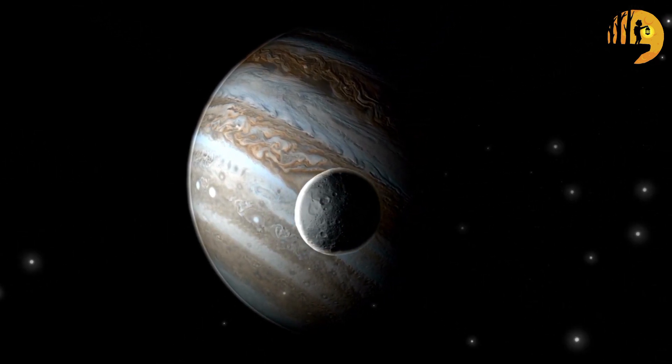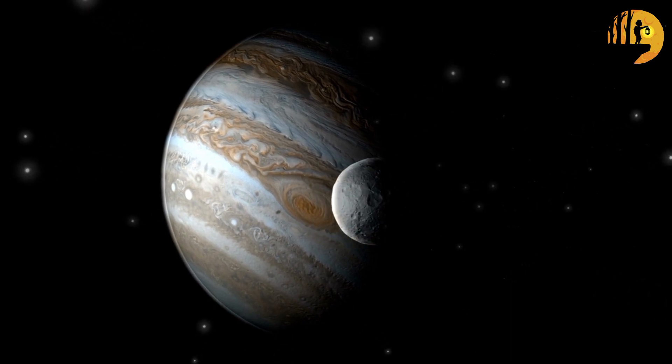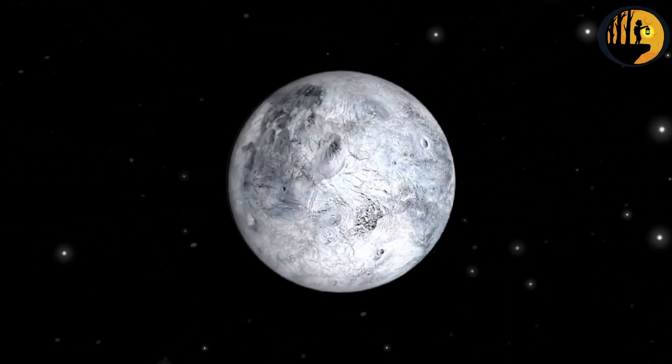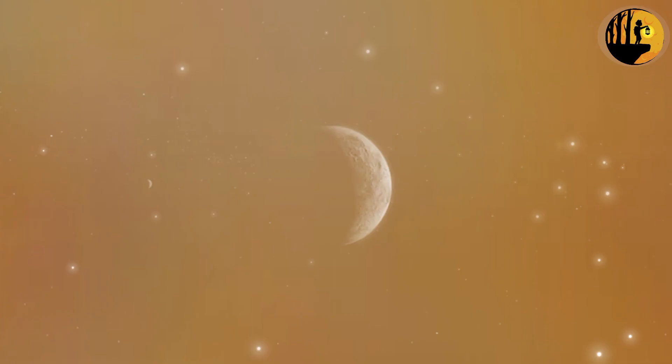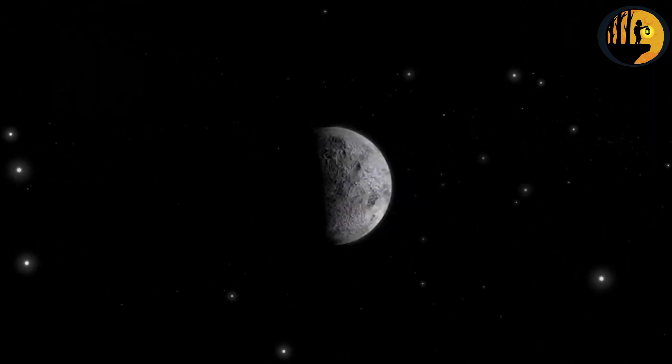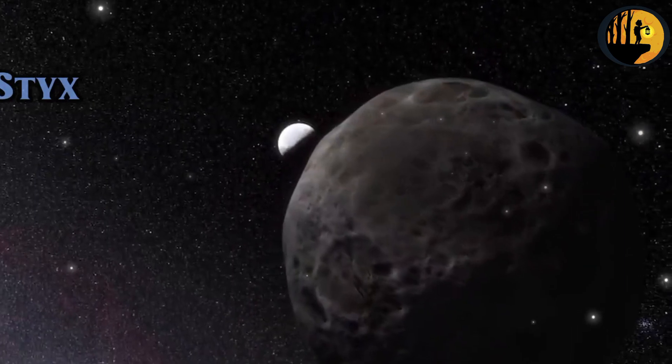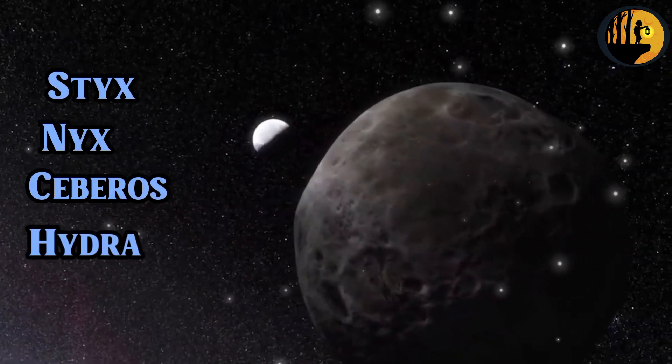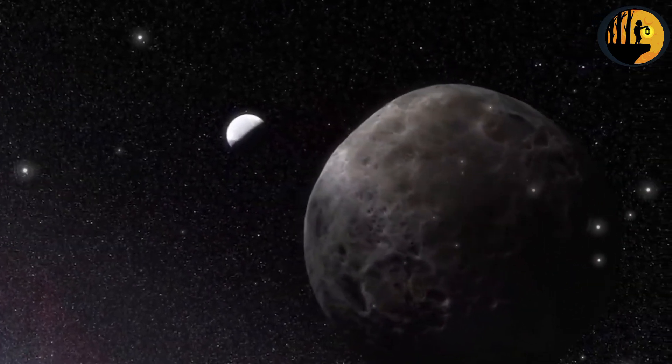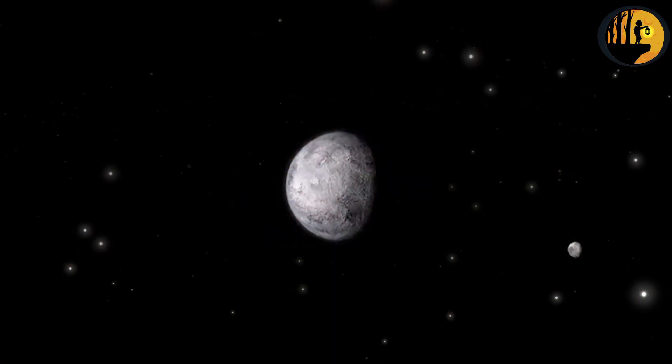Pluto has five known moons, with the largest and closest one being Charon. Charon is about half the size of Pluto itself, and the two are tightly locked, meaning they always face each other with the same sides. The other four moons are smaller and named Styx, Nix, Kerberos, and Hydra. The presence of these moons adds complexity and intrigue to Pluto's system.